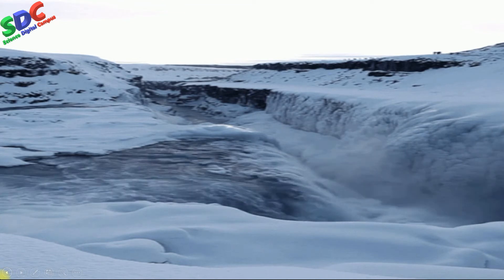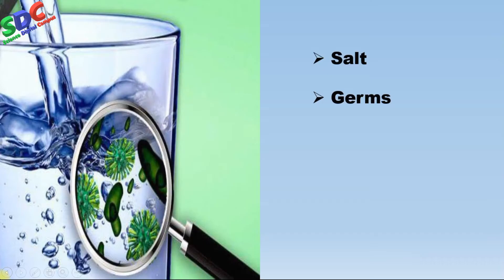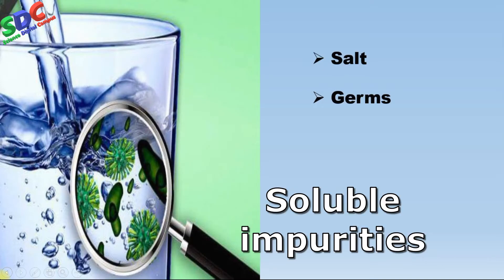Water supplied to our homes may also have many impurities. Mainly, water has two types of impurities. The first one is soluble impurity — in this category, impurities are present but we cannot see them because they are dissolved completely in water.